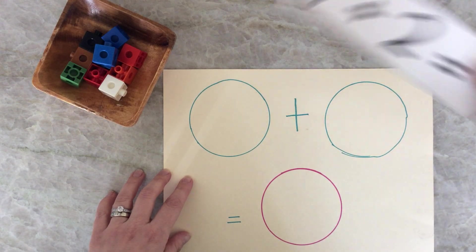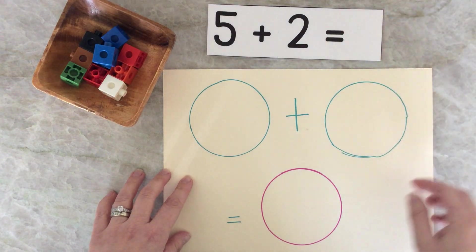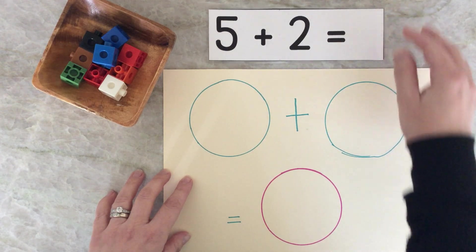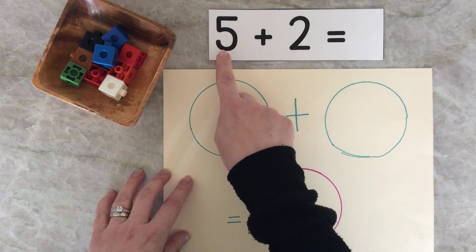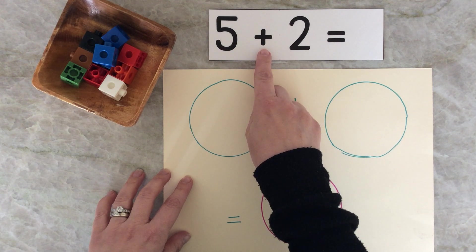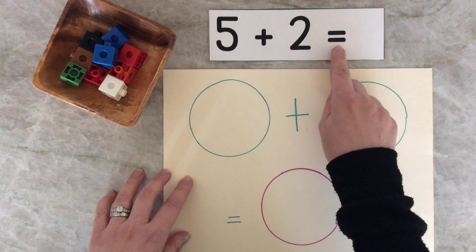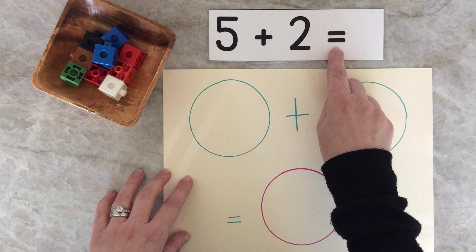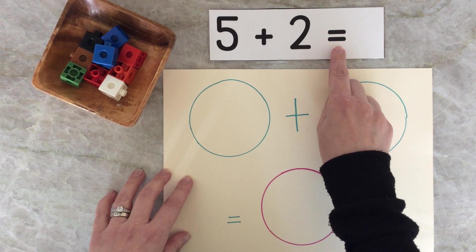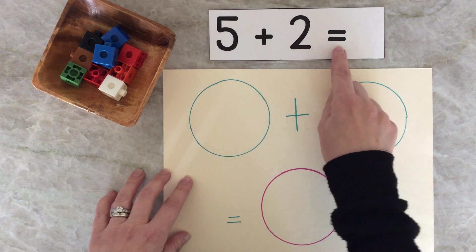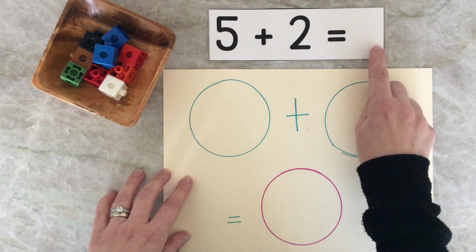So if I show you a question like this, which maybe some of you have seen before, I can read it just like a sentence. Five, I'm going to say the word plus two, and this is an equal sign. It's like a magic word. Five plus two equals. We're going to figure out the answer.